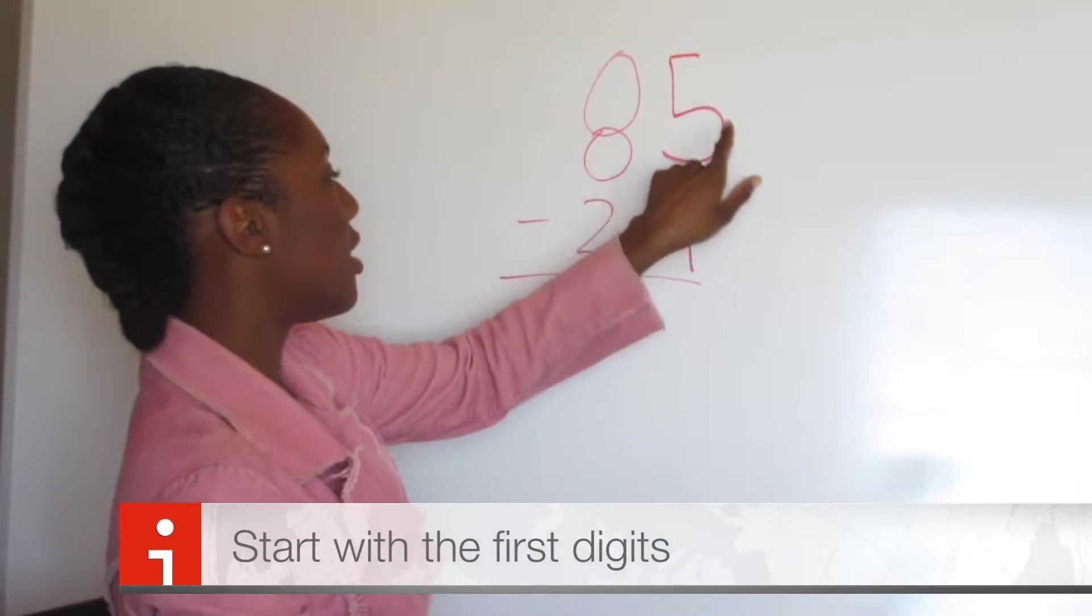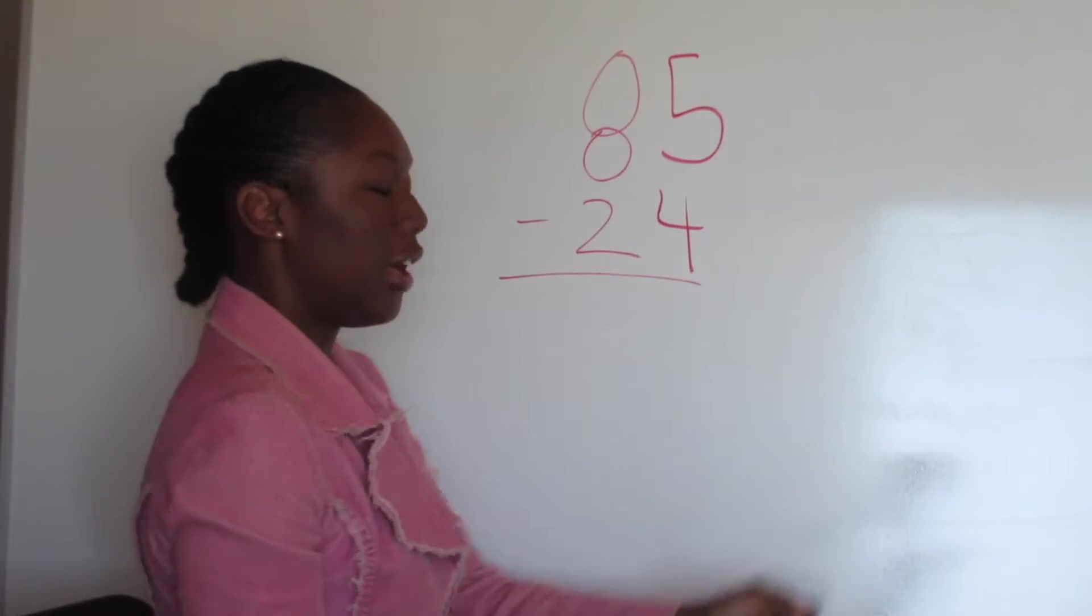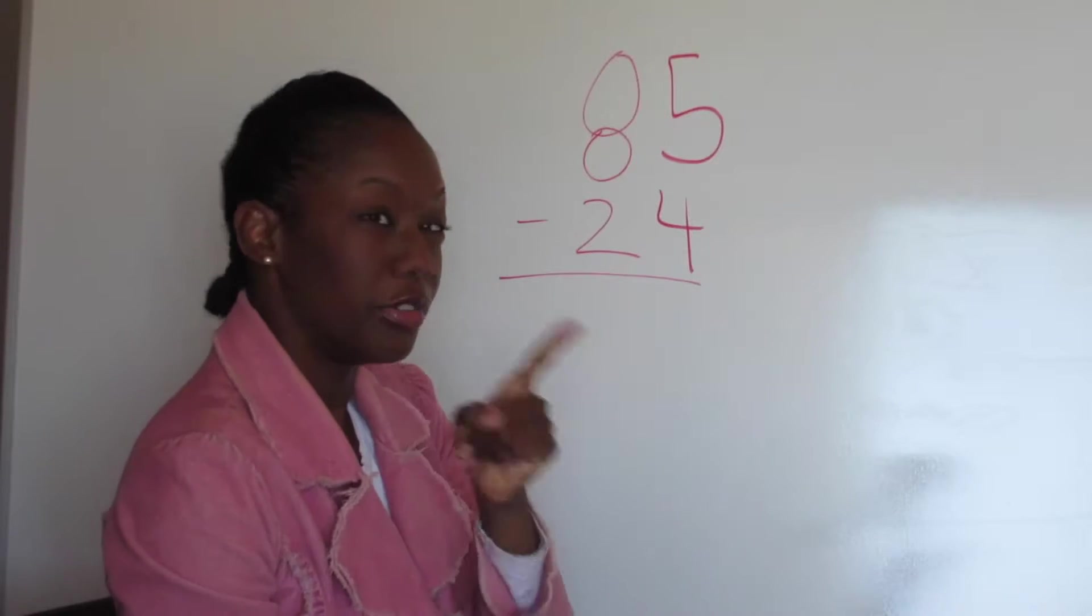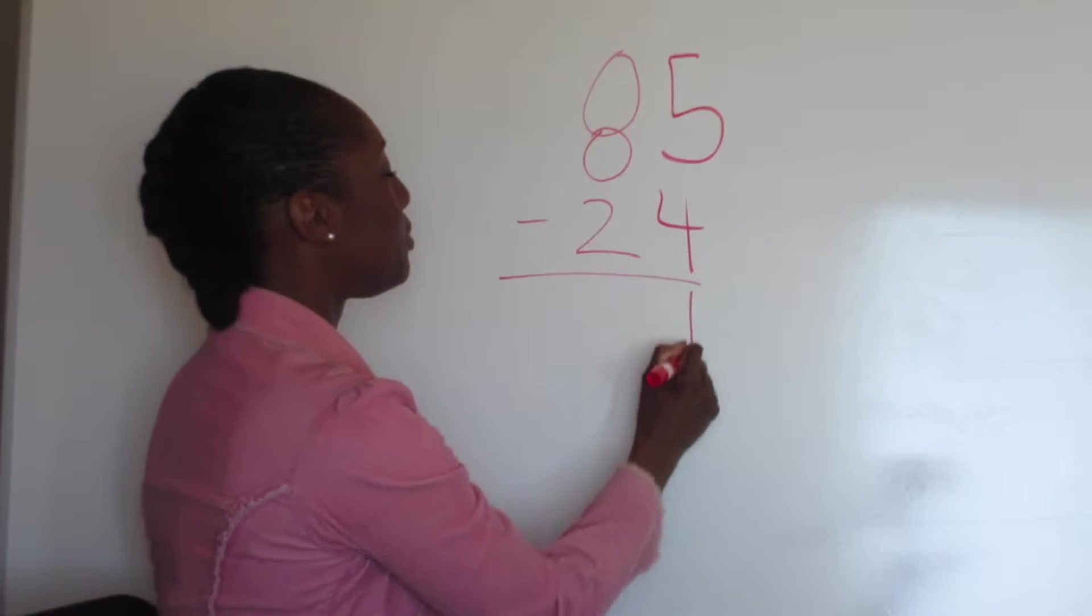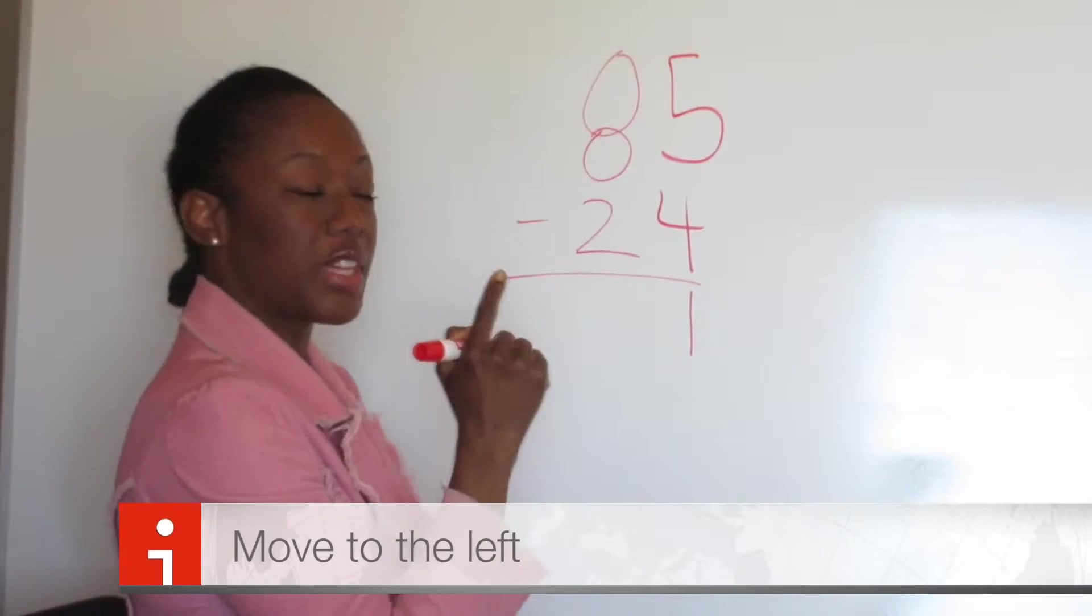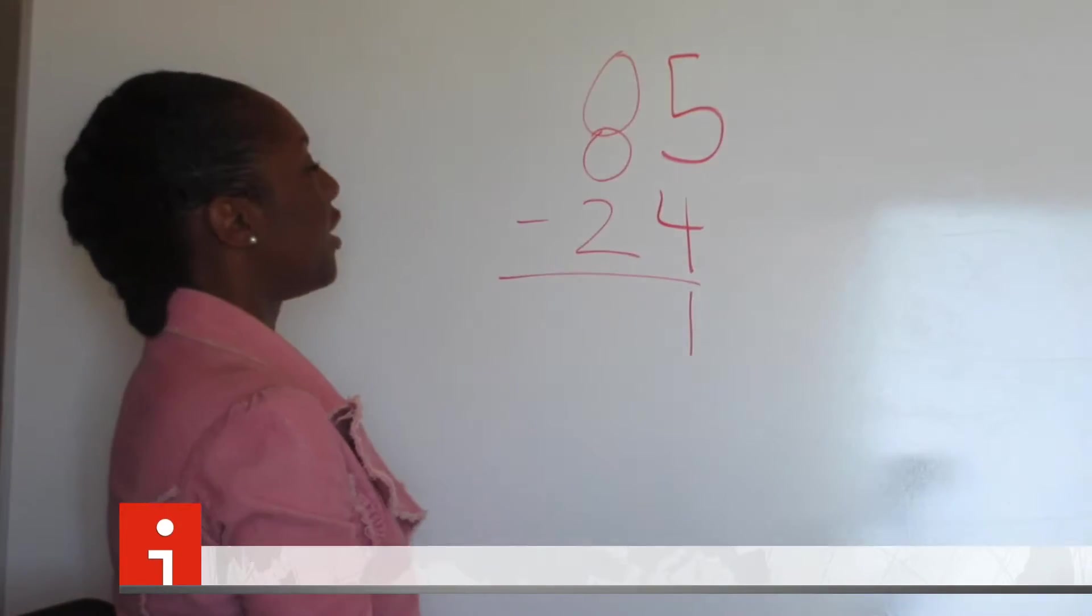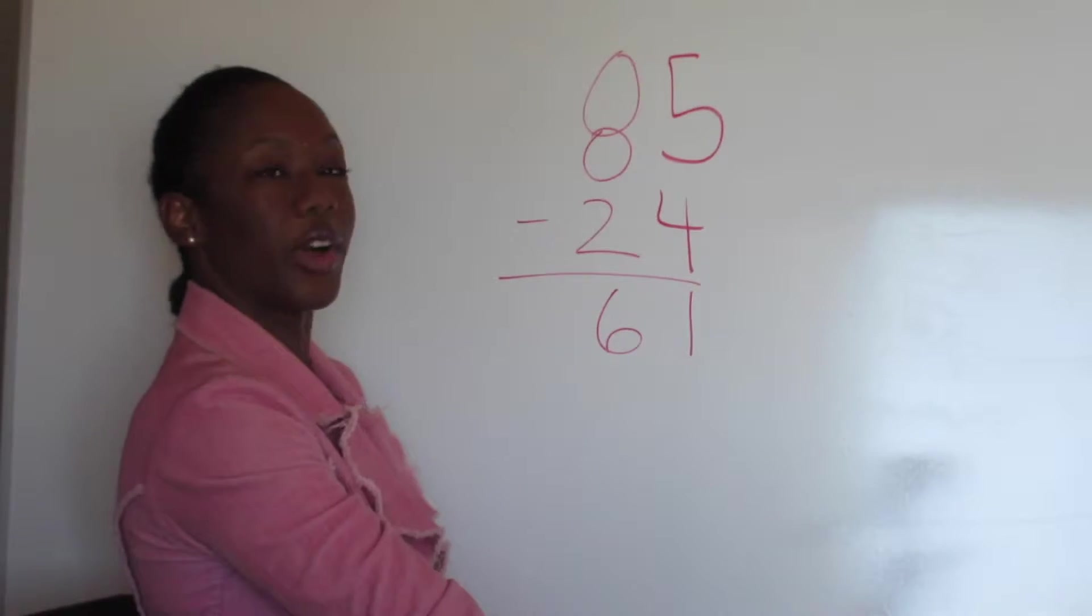Start with the first number. So 5 minus 4. You could use your fingers but we don't do that here. So 5, 4, 3, 2, 1. Then second rule, go to the next digit on the left. So 8, 7, 6, 61. Very easy right?